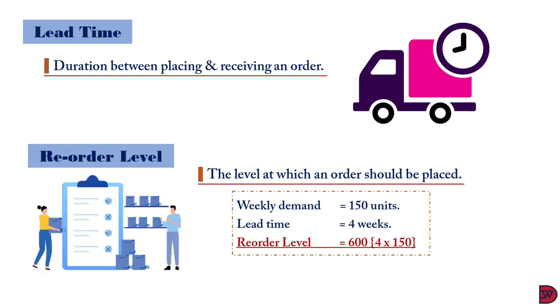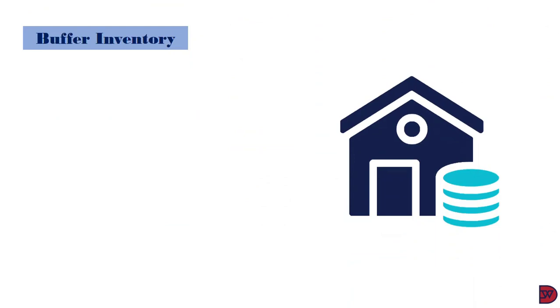Meaning the economic order quantity must be reordered when an entity's stock reaches 600 units. So by the time your ordered goods get into your warehouse, you will not be short of inventory to sell. Now in practice,